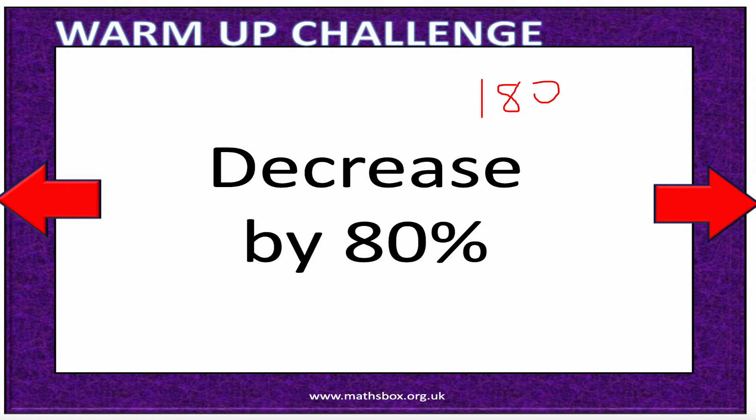Decreasing by 80%. Essentially what I'm going to do is multiply by 0.2, because I'm taking 20% of the amount. Decreasing by 80% means I'm working out 20% of the amount. So 180 times 0.2—well, 18 times 2 is 36 if I ignore the zeros.